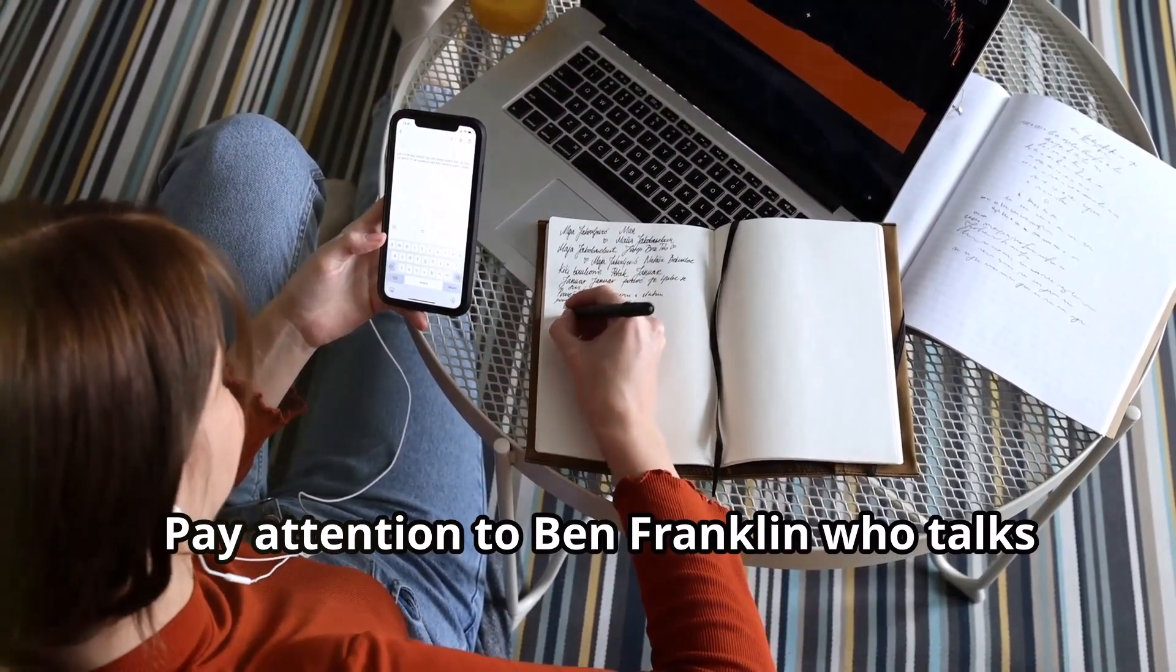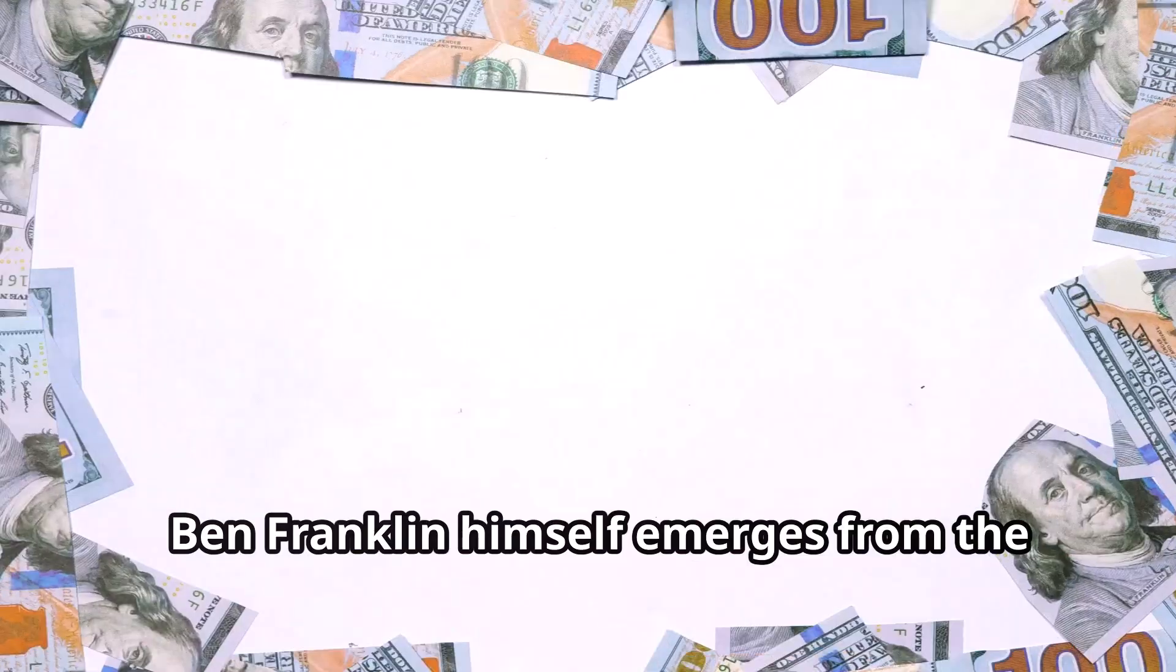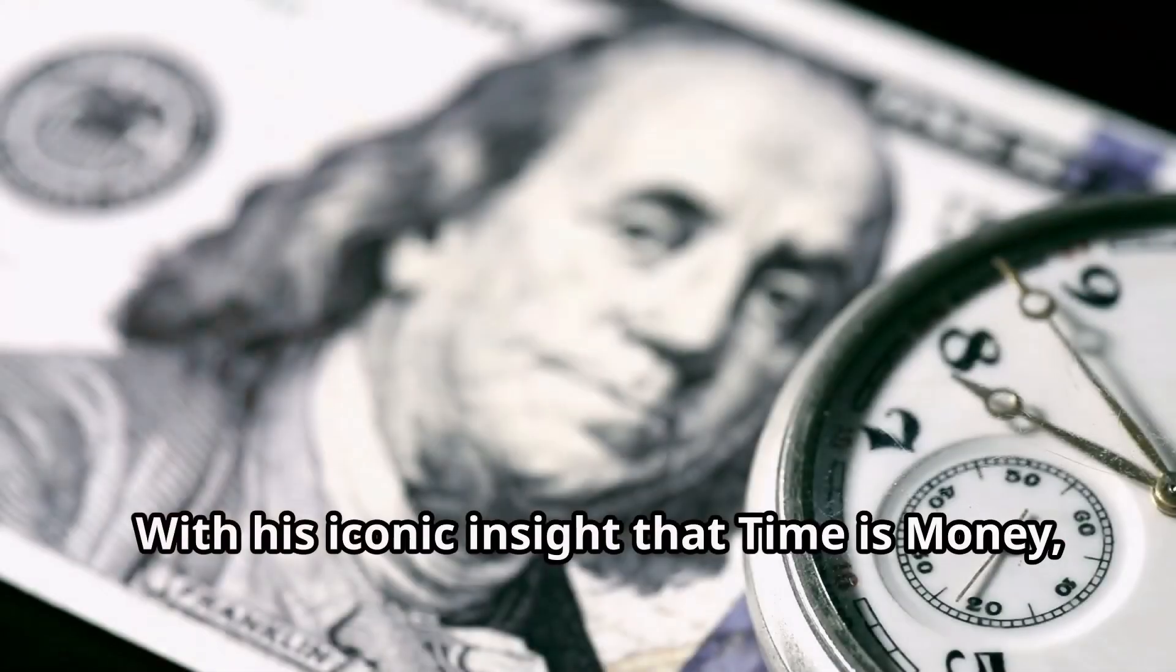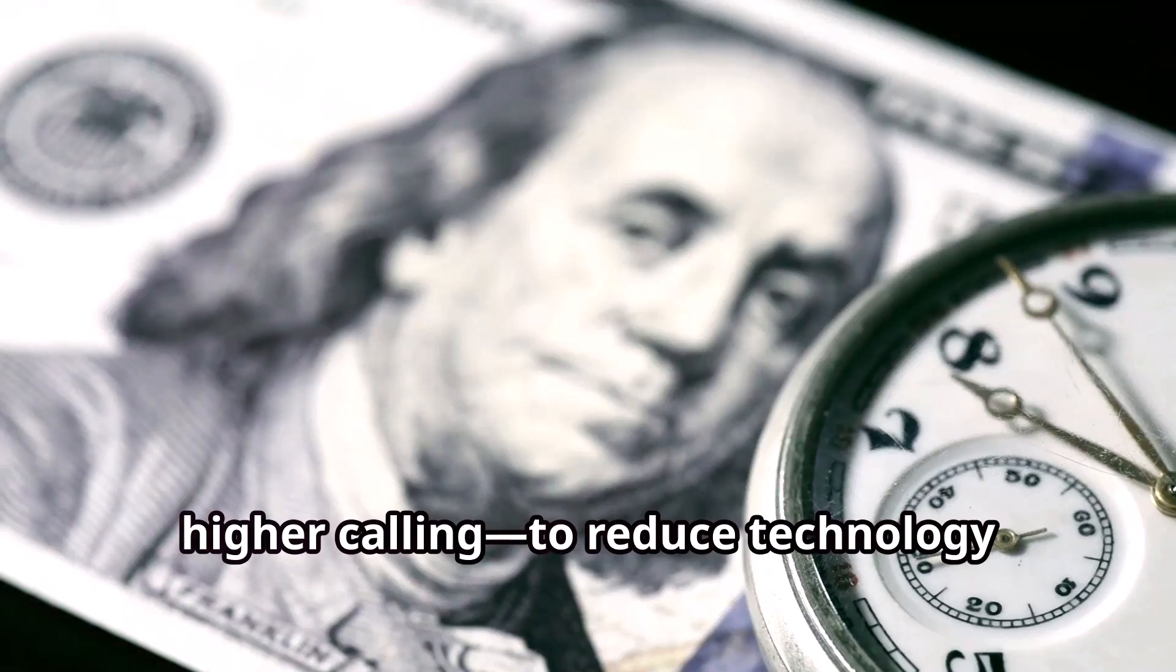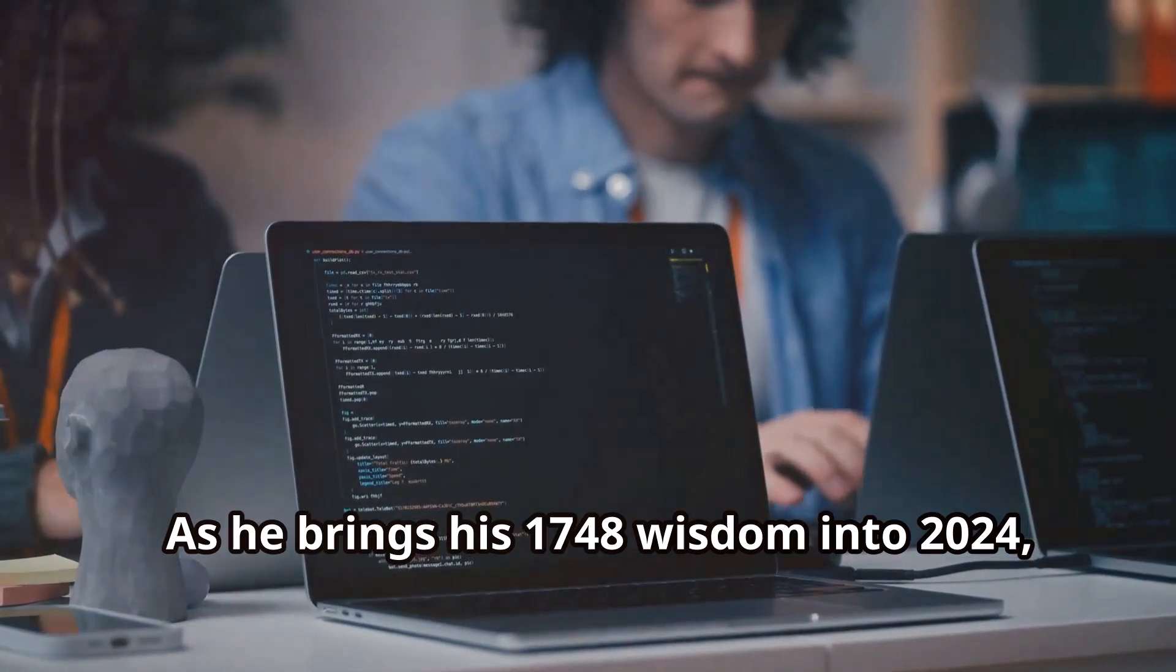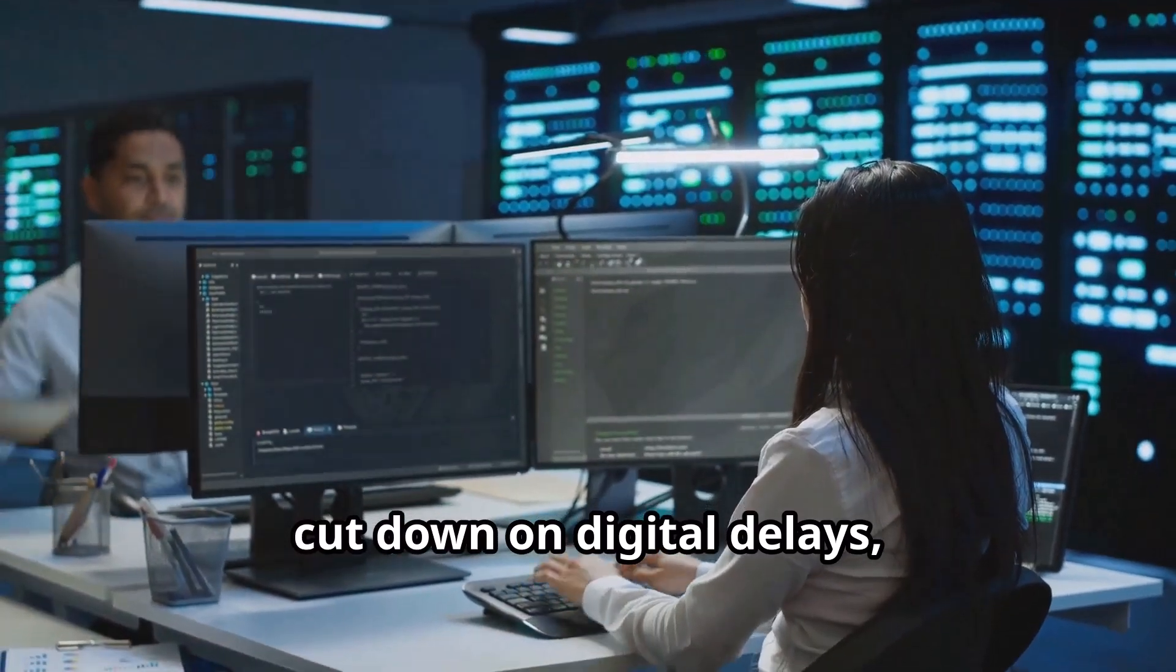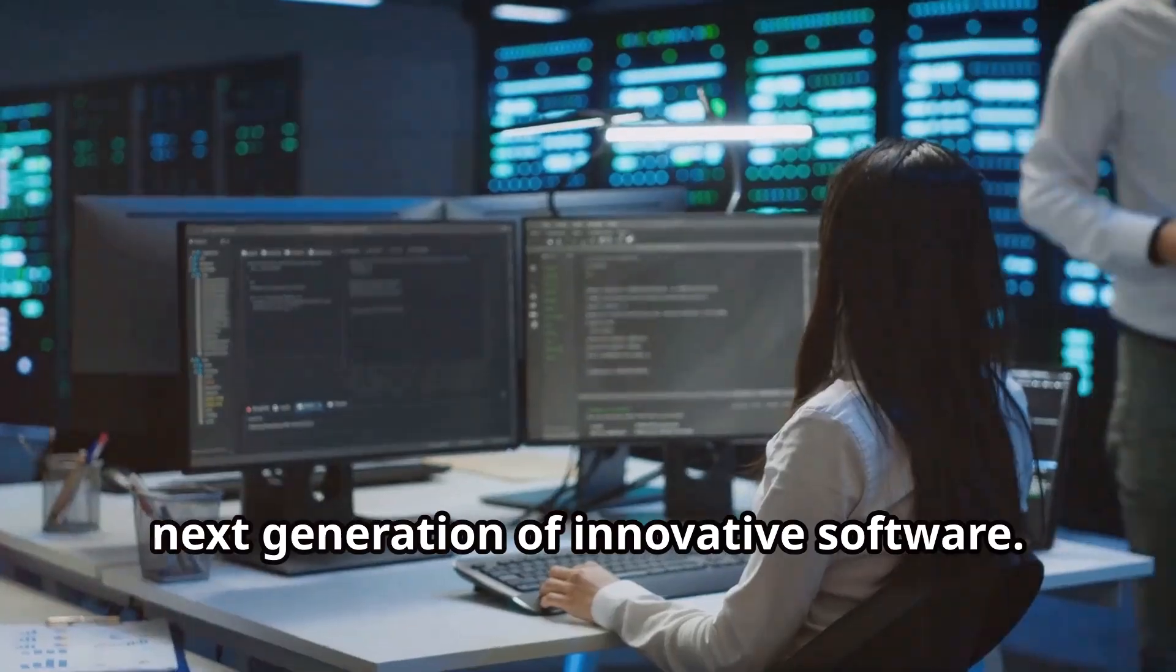Pay attention to Ben Franklin who talks about technology airtime. Ben Franklin himself emerges from the $100 bill to deliver an urgent message for modern-day software programmers. With his iconic insight that time is money, Franklin challenges developers to adopt a higher calling to reduce technology airtime by writing efficient, tight code. As he brings his 1748 wisdom into 2024, Franklin calls on today's tech minds to cut down on digital delays, honoring both time and efficiency for the next generation of innovative software.